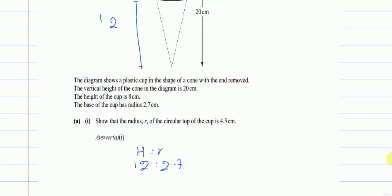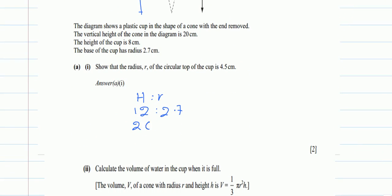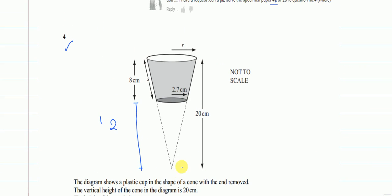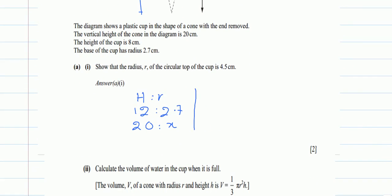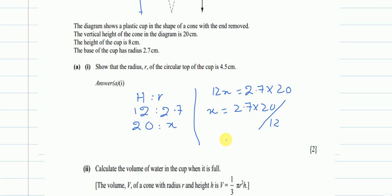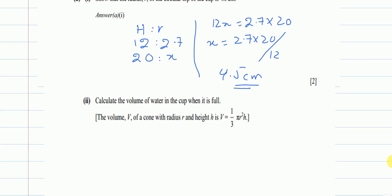When my height increases from 12 up to 20, I'm looking for how much the radius will open. The proportion will be the same, so using cross multiplication: 12x = 2.7 × 20, therefore x = (2.7 × 20) / 12, which equals 4.5 centimetres.